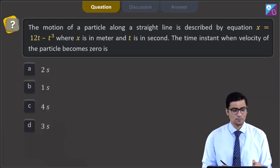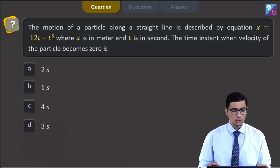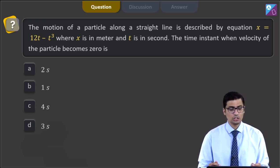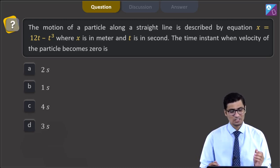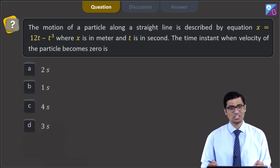Now let us proceed to the next question. This is question 48. The question states, the motion of a particle along a straight line is described by the equation x is equal to 12t minus t cubed where x is in meter and t is in seconds. The time instant when the velocity of the particle becomes 0 is 2 second, 1 second, 4 second and 3 seconds.